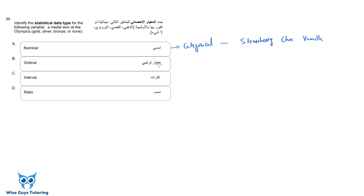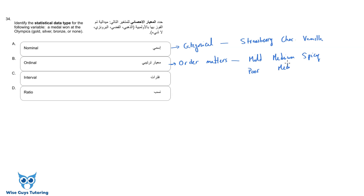Ordinal is similar to nominal but the order matters — that's why it's called ordinal. For example, ordering food as mild, medium, or spicy — there is an order. Or a customer satisfaction survey: poor, medium, or great — great is best, poor is worst. It could also be first, second, third. Named variables where order is significant.